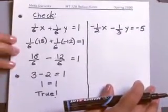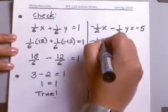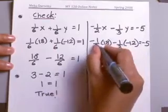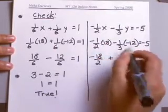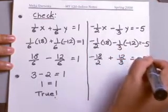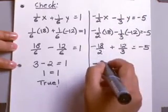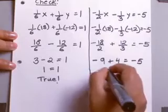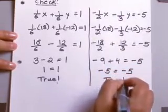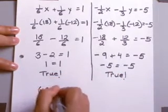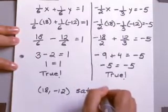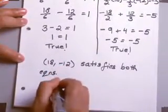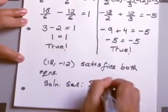For the second equation, substitute x equals 18 and y equals negative 12. This gives negative 18/2 plus 12/3, which reduces to negative 9 plus 4, which equals negative 5. That is a true statement. So (18, negative 12) satisfies both equations, and the solution set for this system is the ordered pair (18, negative 12).